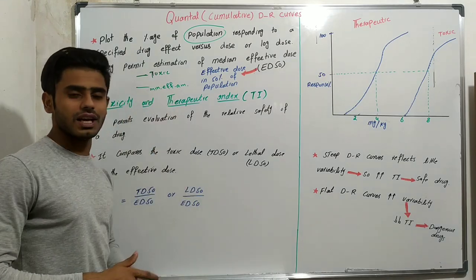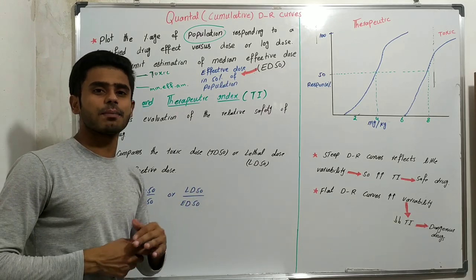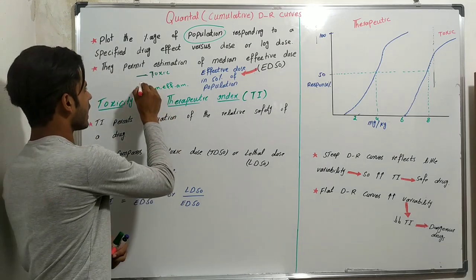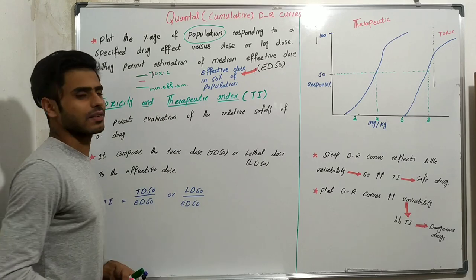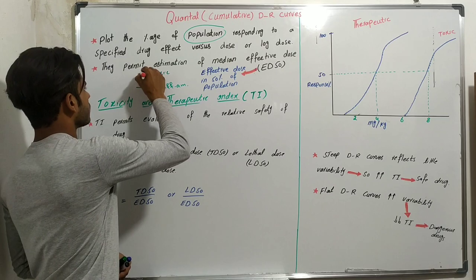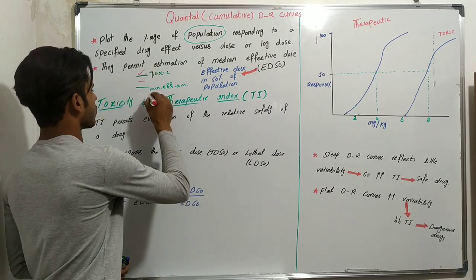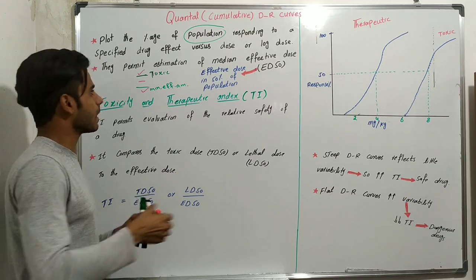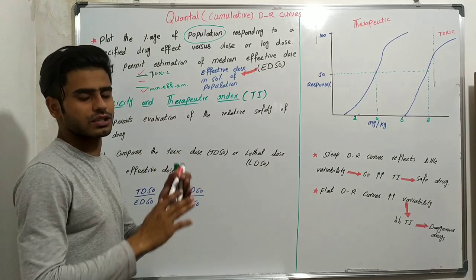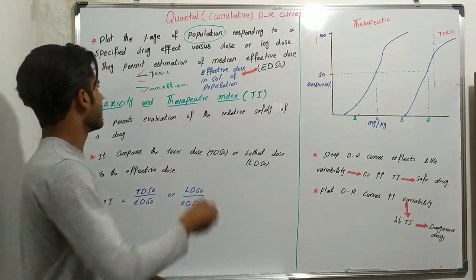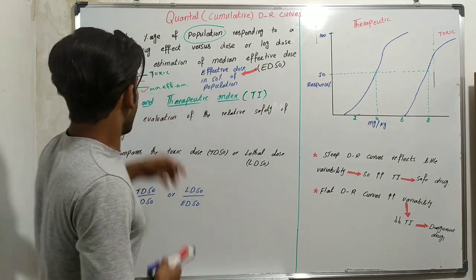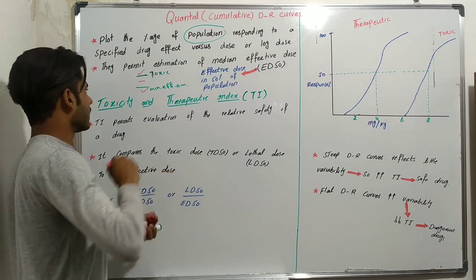Toxic concentration is the concentration of a drug that becomes toxic in our body. We should give the patient a dose of a drug in between the toxic and minimum effective concentration. It must not be so much that it becomes toxic, and it must not be so little that it fails to reach the minimum effective concentration.